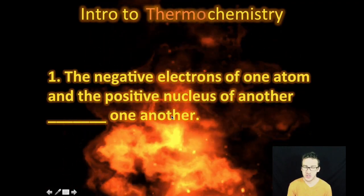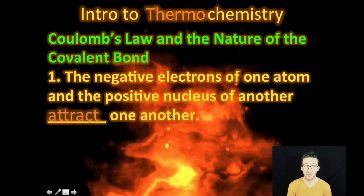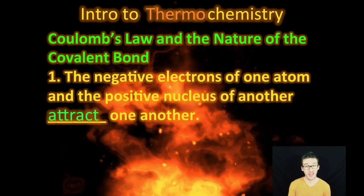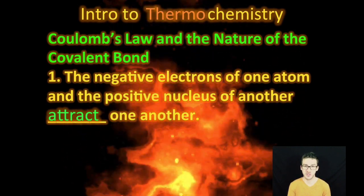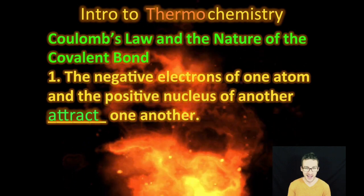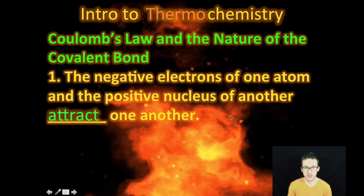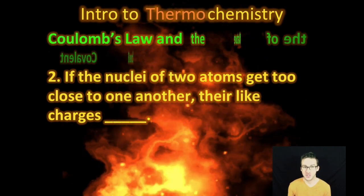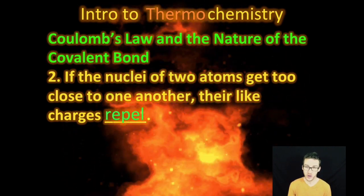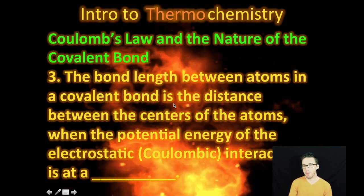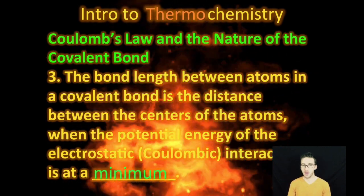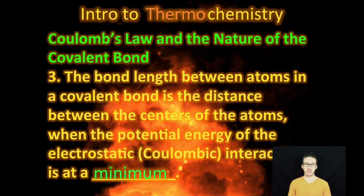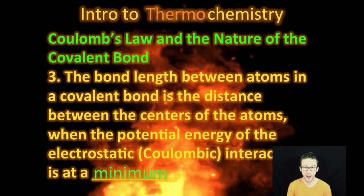So then lastly, just a couple of quick things to think about when we think about bonds and bond energies. Remember that bonds are essentially just these electrostatic attractions between opposite charges in neighboring atoms. Your negative electrons are attracted to the positive nucleus of another atom. Now, it's also important to recognize that if the atoms get too close together, their like charges will repel one another. And so, when we think about the bond length between atoms in a covalent bond, it's the distance between the centers of the atoms when the potential energy of those electrostatic interactions is at a minimum.